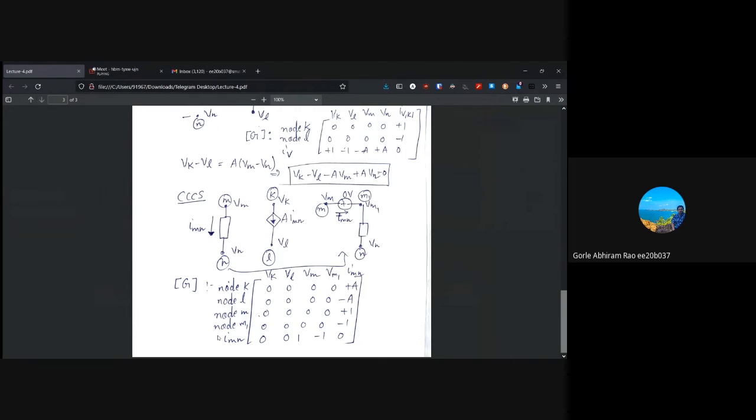And now, if you want to just write the relation for this imn, this imn is flowing between m and m1. And these are connected by a zero volt voltage source. So, basically, we can write that vm minus vm1 is equal to zero. So, the stamp coefficient of this is one and minus one respectively. And this whole matrix is the contribution which this current controlled current source will make to the g matrix.